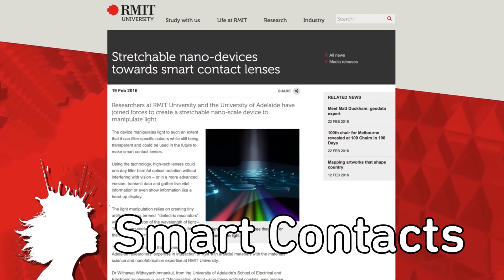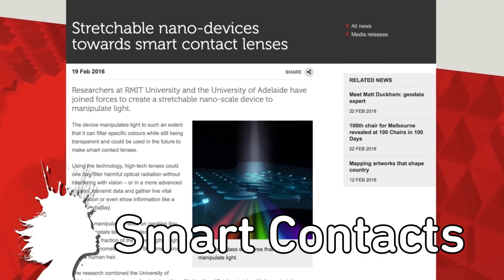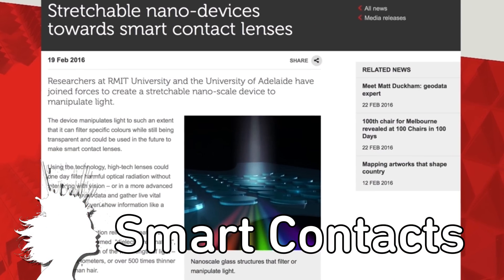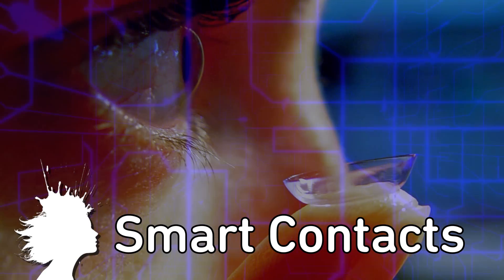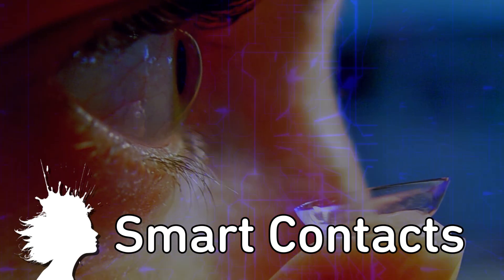Researchers in Australia have created flexible material with nanoscale glass structures that can manipulate light, a potential precursor to smart contact lenses that display information.